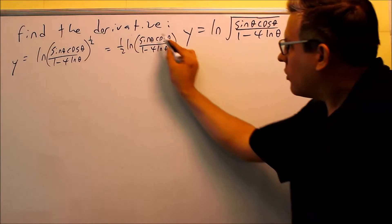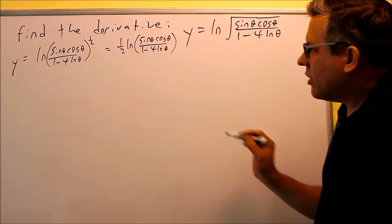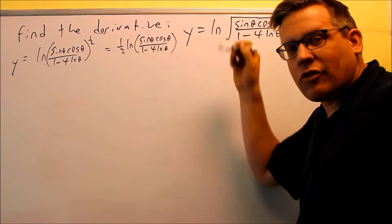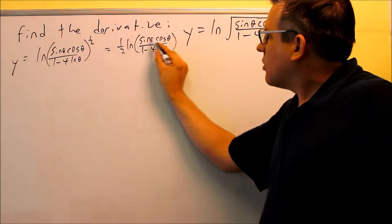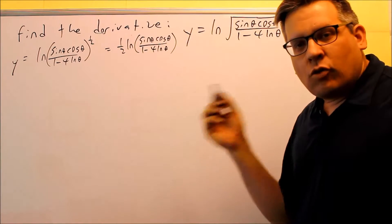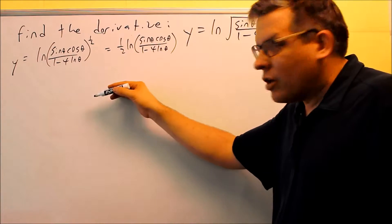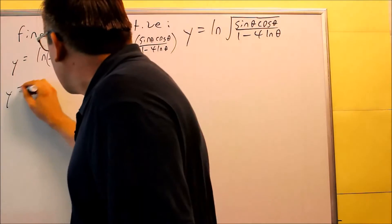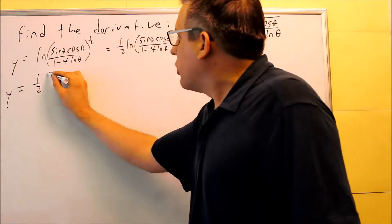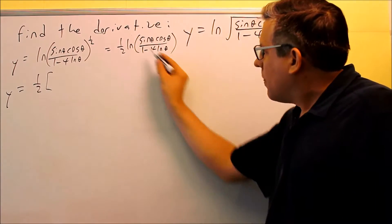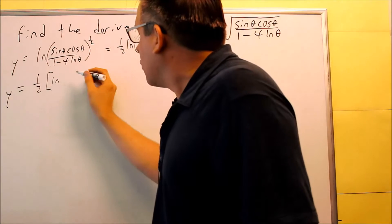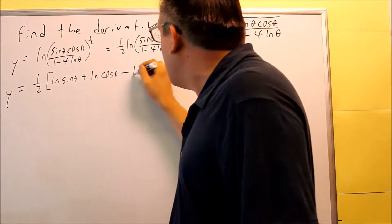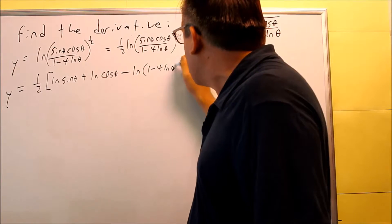Now we have to separate the natural logs inside. On top I have a product, so there'll be a plus, and since I'm doing division, I'll have a minus. Anything on top will become a positive ln when you separate it; anything on the bottom will have a negative sign in front of it. So you get 1/2 times [natural log of sine theta plus natural log of cosine theta minus natural log of (1 minus 4 natural log theta)].